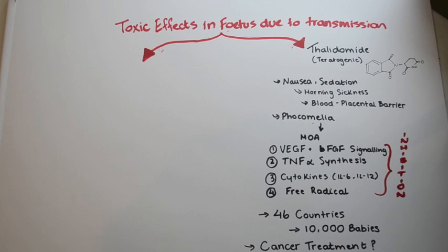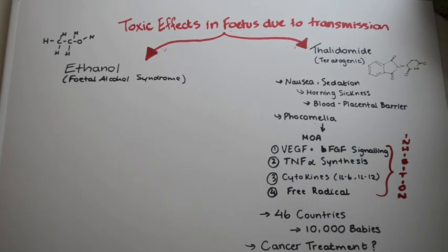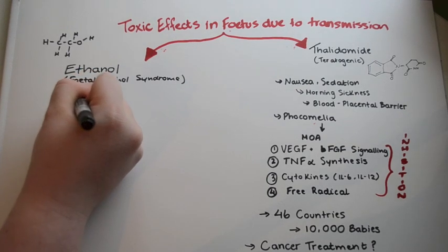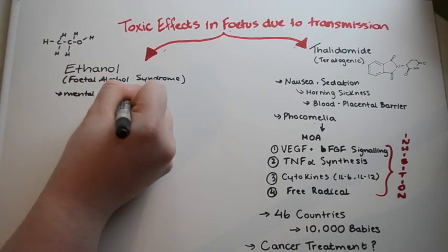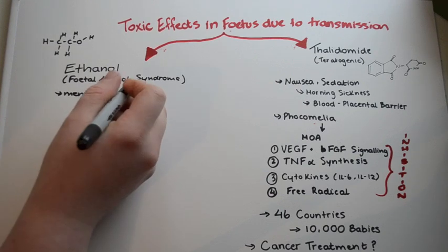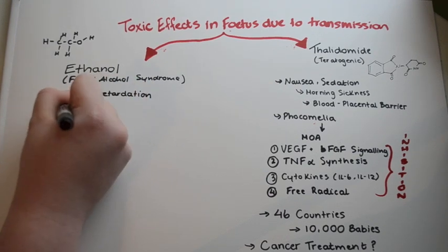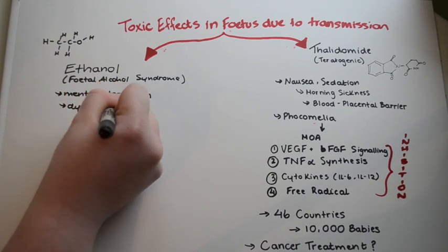The second toxin we will be focusing on is Ethanol. Ethanol is responsible for the development of fetal alcohol syndrome. This was described in 1923 as dysmorphic facial features and growth delays. This develops due to alcohol consumption whilst pregnant.